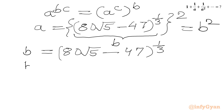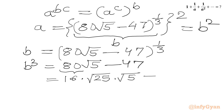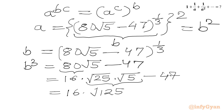Cubing both sides, b cubed equals 80√5 minus 47. Now I can factor 80 as 16 times 5, and write 5 as √25 times √5, giving 16 times √125 minus 47. This equals b cubed.